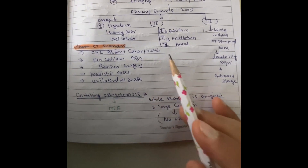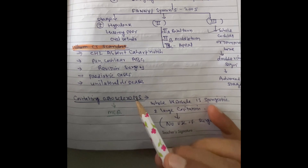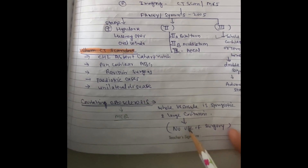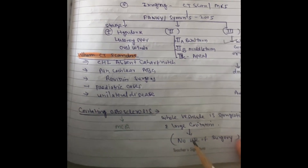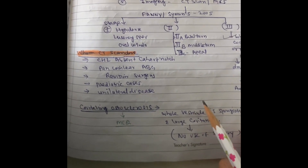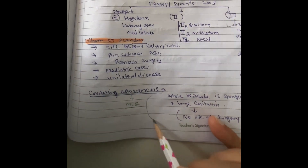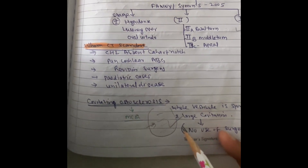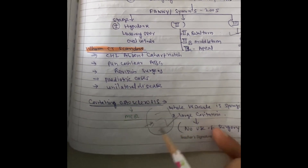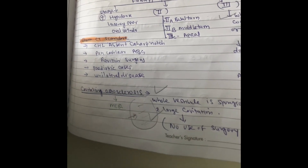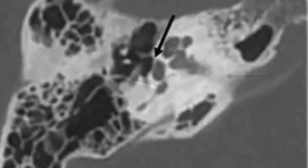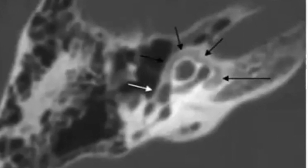Cavitating otosclerosis is when the vascular size is increased because of loose bone formation around it, leading to large cavity formation. On CT scan you see a double ring sign with an expanding large cavity. If you put a piston in this large cavity, it is not useful because the large vacuum inhibits sound propagation to the middle ear. You can see lucency over the footplate at Stage 1 on CT — this is advanced otosclerosis with double ring sign.